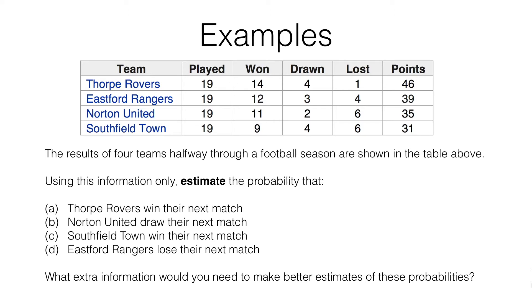Let's look at question A. We want to estimate the probability that Thorpe Rovers win their next match. All we know is that out of their previous 19 matches, they have won 14 of them. So the best estimate we can make for A is 14/19. They've won 14 out of their previous 19 matches, so we can say they win 14/19 of the time — and that's an estimate for the probability that they will win.